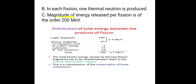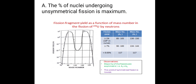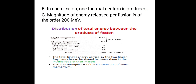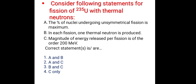Now statement C: the magnitude of energy released per fission is of the order 200 mega electron volts. Looking at this table showing distribution of energy between all the products of fission, the total energy is 200 MeV, plus or minus 5 MeV. So it is of the order of 200. Therefore, statement C is correct. In summary, statement A is correct, statement B is incorrect, and statement C is correct. Our answer is option 2 — statements A and C are correct.